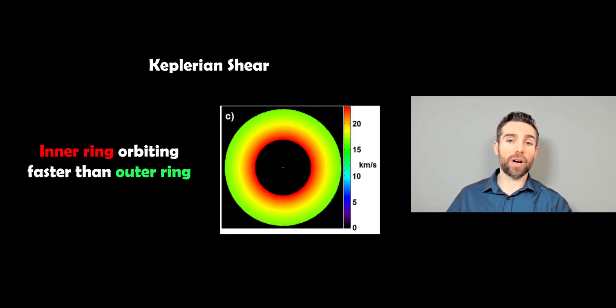So to give you a bit more of an idea what Kepler and shear is, this is an example of the orbital velocity in Saturn's rings from a computer simulation that I created. And it shows you that the inner edge is orbiting at over 20 kilometers per second, whilst the outer edge is orbiting considerably slower, around about probably less than 15 kilometers per second.